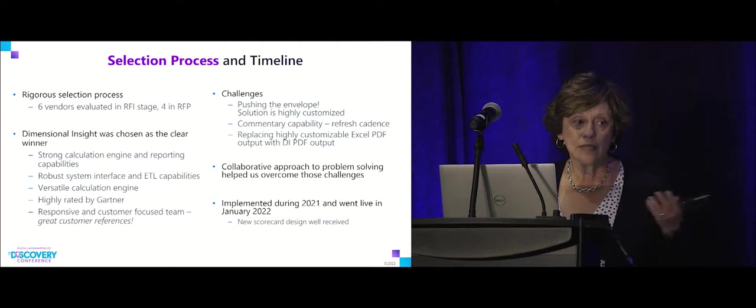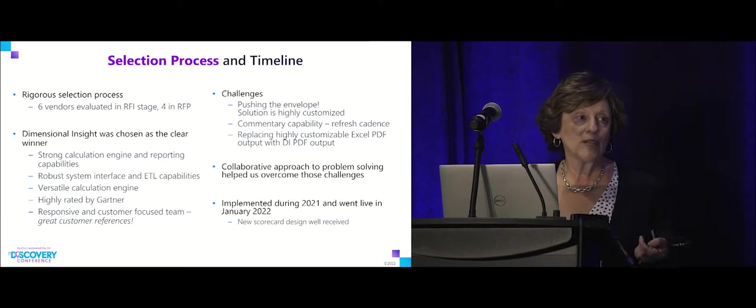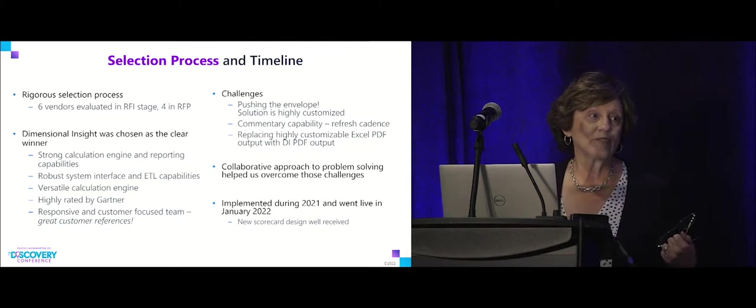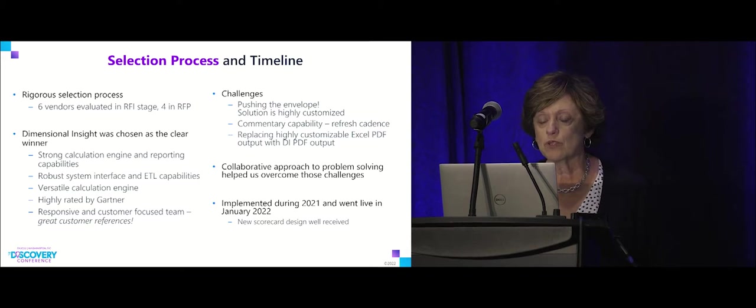All right. So moving on to our selection process and timeline. So a very rigorous selection process. It took place over several years, which will come probably as no surprise to the folks who worked with at DI that we were very organized and really went in depth. So we actually started out evaluating about 30 or so vendors. We then narrowed that list to six vendors that we evaluated through the RFI process, and then narrowed that again to four vendors in the RFP process. Dimensional insight really rose to the top and was the clear winner in that process and that very rigorous process.